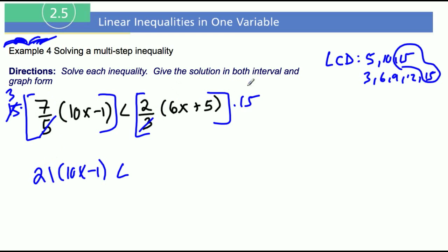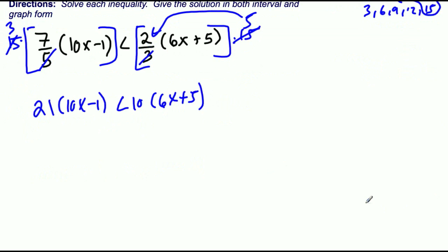Same thing right here: 3 goes into 15 five times, so 5 times 2 is 10 times (6x + 5). And now we have made the fractions go away, and so now we just go ahead and multiply through.